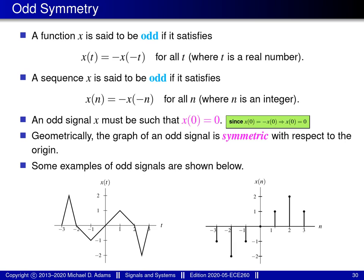The next type of signal symmetry I need to introduce is what's known as odd symmetry. A function x is said to be odd if it satisfies a condition of this form. Essentially, for all real t, if I evaluate the function at plus t and at minus t, the only difference is a sign difference between these two values — their magnitudes are the same, it's only the sign that's different.